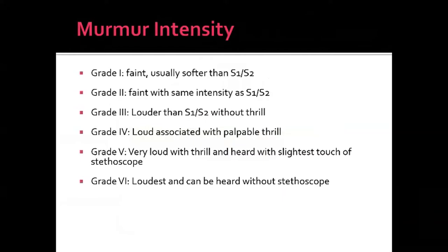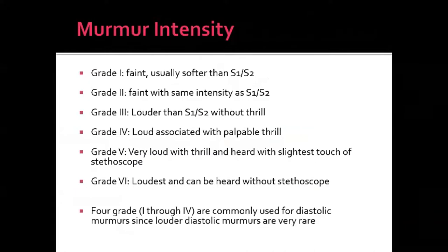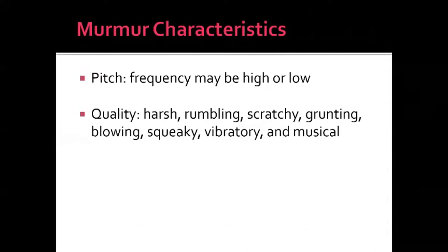Systolic murmurs are graded on a scale of one to six. Grades one and two are faint, similar in intensity to S1 and S2. Grade six is the loudest — heard without a stethoscope. Diastolic murmurs are usually graded up to four. Pitch and quality also help characterize murmurs; certain valve lesions are associated with specific murmur qualities. With experience, you learn to recognize, for example, an aortic stenosis murmur by its characteristic sound.